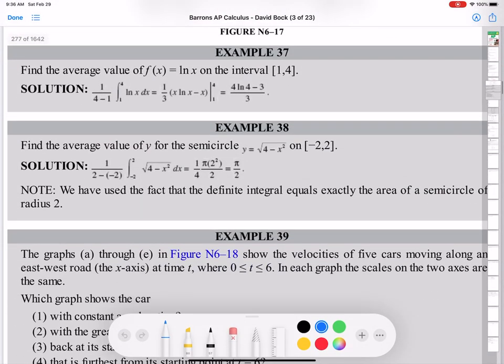Example 37, find average value of f(x) equals ln(x) on the interval [1,4]. So by that formula, integral is 1 over b minus a, a is 1, b is 4. So 4 minus 1, and integral 1 to 4 ln(x) dx.